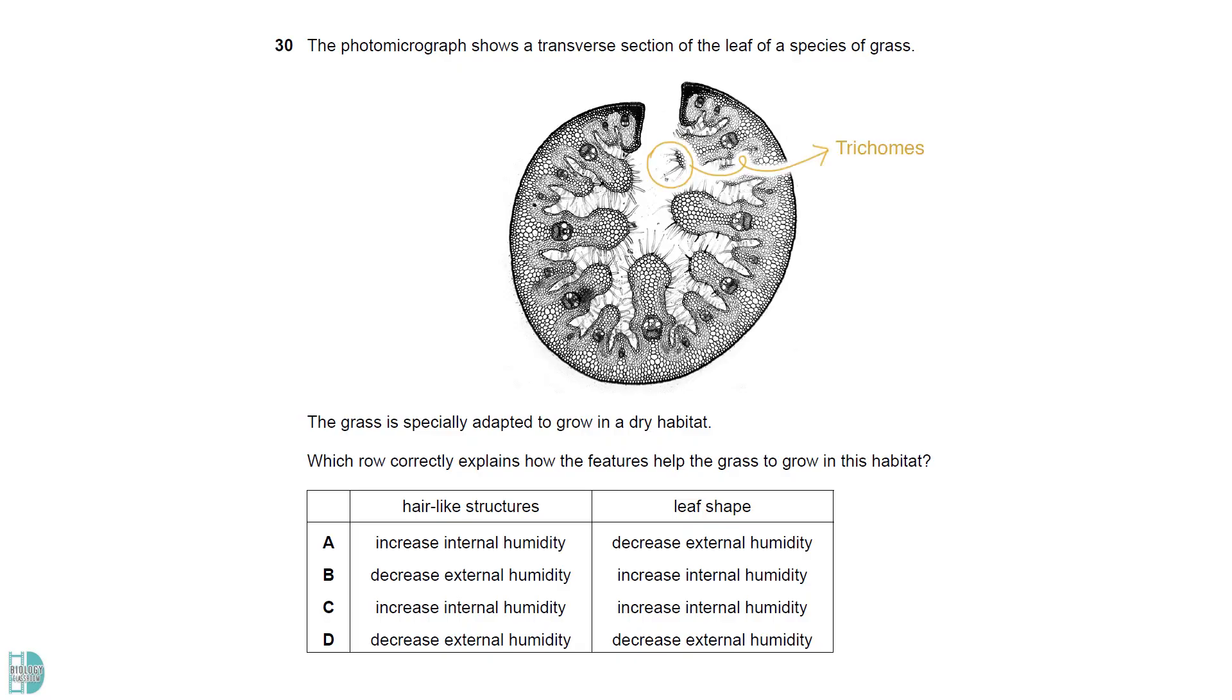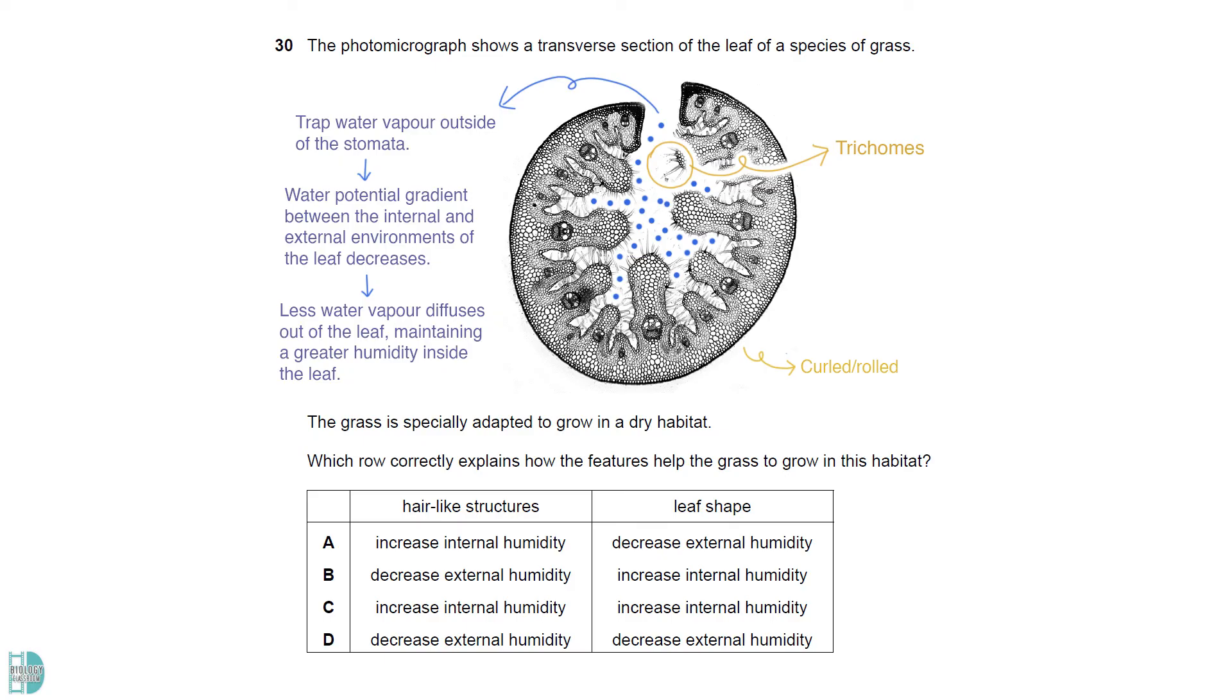The hair-like structures are trichomes. The leaf has curved. Both features help to trap water vapor outside of the stomata decreasing the water potential gradient between the internal and external environment of the leaf. This causes less water vapor to diffuse out of the leaf, maintaining a greater humidity inside the leaf.